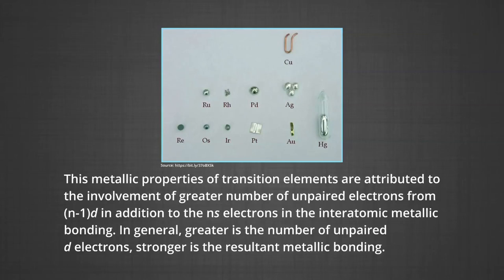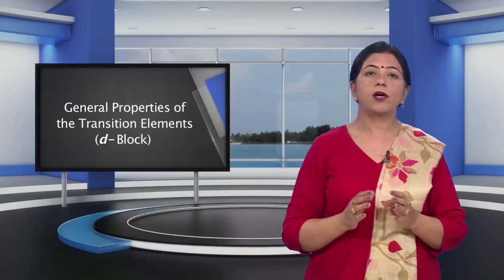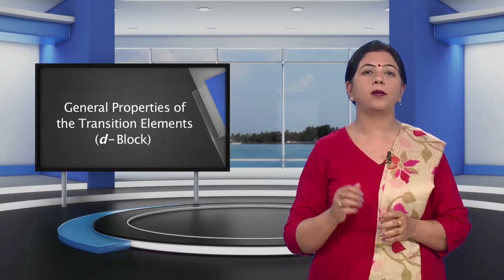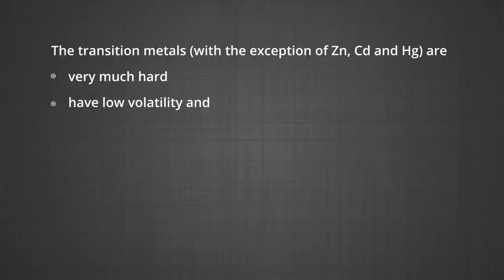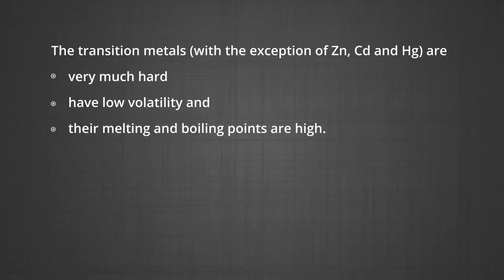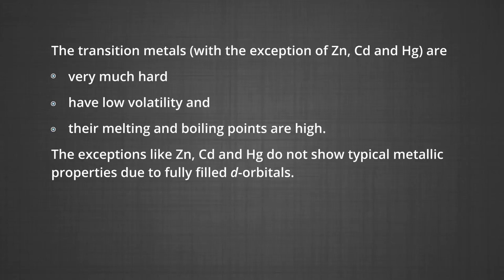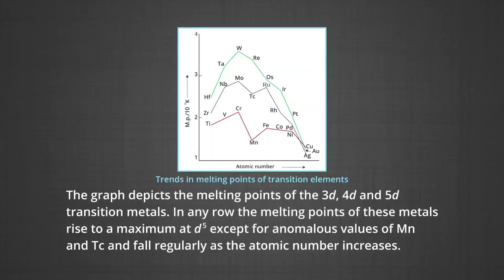In general, greater is the number of unpaired D electrons, stronger is the resultant metallic bonding. The transition metals, with the exception of zinc, cadmium and mercury, are very hard. They have low volatility and their melting and boiling points are high. The exceptions zinc, cadmium and mercury do not show typical metallic properties due to fully filled D orbitals. In any row, the melting points of these metals rise to a maximum at D⁵, except for anomalous values of manganese and technetium, and fall regularly as the atomic number increases.